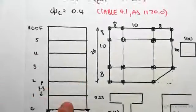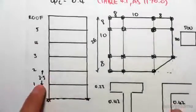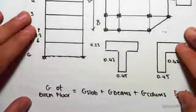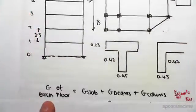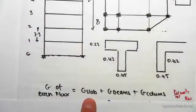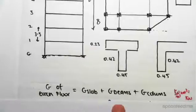Our building looks like this, it's six stories high, each height is 3.5 meters. So the first thing we're going to be doing is working out the G, the dead load on each floor. It's going to be the addition of the sum of the slab, beams and columns.